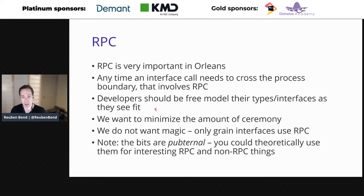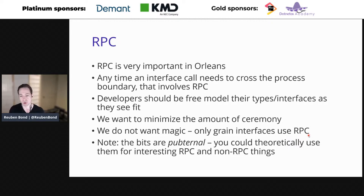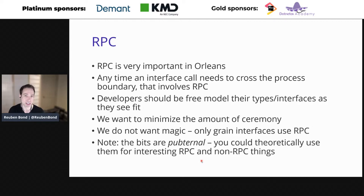RPC is extremely important in Orleans because anytime you make an interface call it involves RPC. Our philosophy: developers should be free to model types and interfaces as they see fit, and we minimize ceremony — as long as you inherit from a grain interface, we generate RPC types for you. Note that all the serialization and RPC stuff is publicly accessible but theoretically internal, so you can use it for other things: database journals, event sourcing, code-based workflows, simple IPC, or RPC over HTTP instead of Orleans.